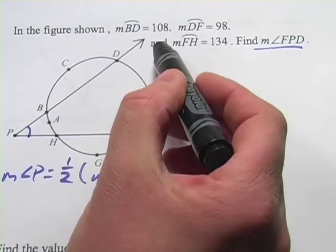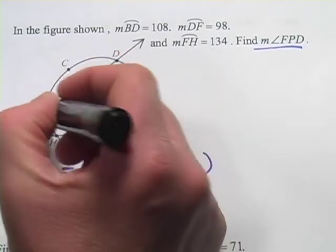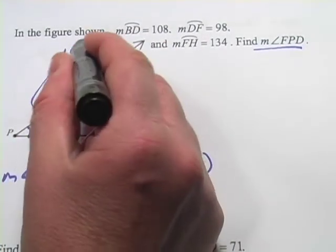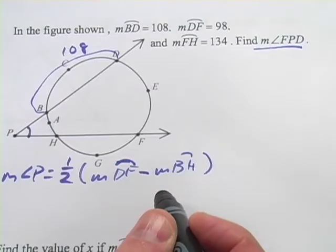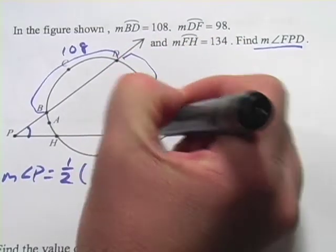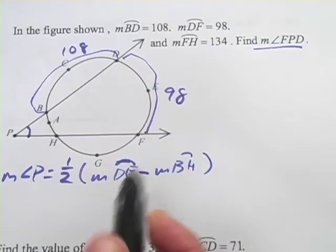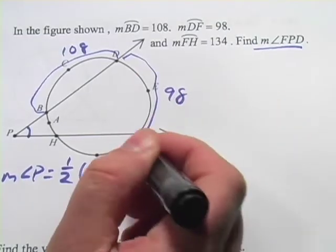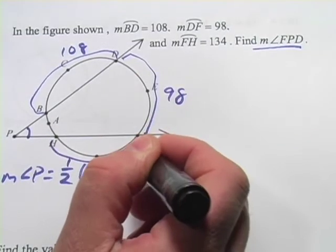Let's see, we're told that arc BD is 108, arc DF is 98, oh good, we need that one. That's the big arc. And arc FH is 134, so this business down here is 134.